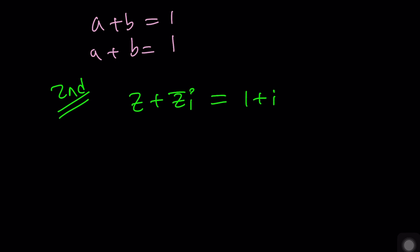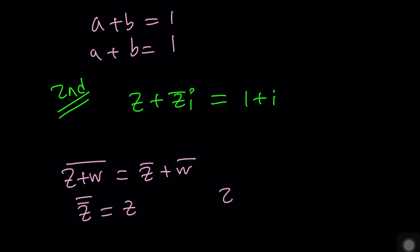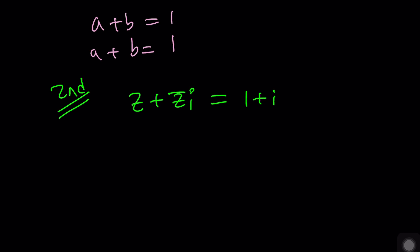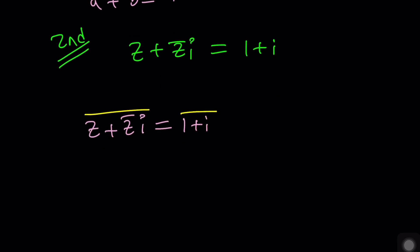The conjugate of the conjugate is the number itself, and if Z̄ equals Z then Z is real. So let's conjugate both sides of our equation. The conjugate of Z̄ is Z, and i conjugated is negative i. On the right-hand side, the conjugate of 1 plus i is 1 minus i. This gives a second equation: Z̄ minus Zi equals 1 minus i.